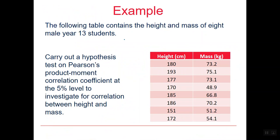Let's go through an example. The following table contains the height and mass of eight male Year 10 students, so the sample size is 8. We are asked to carry out a hypothesis test on Pearson's product moment correlation coefficient at the 5% level — that is the significance level — and to investigate for correlation between height and mass. We aren't told which direction, so this is a two-tailed test.